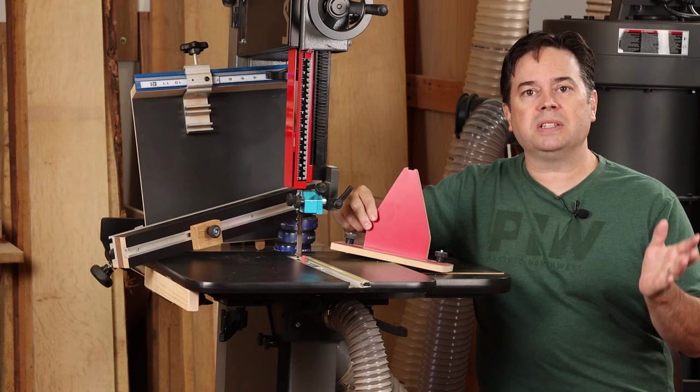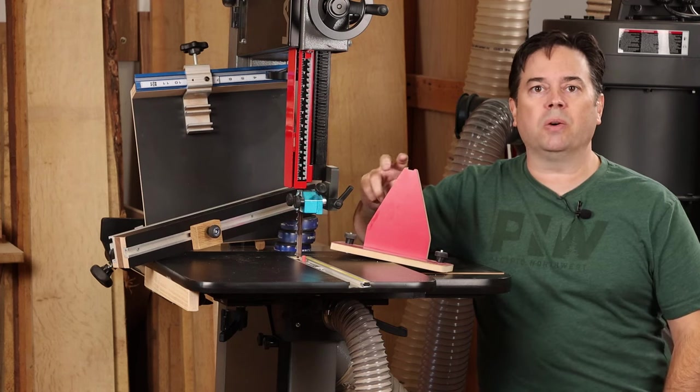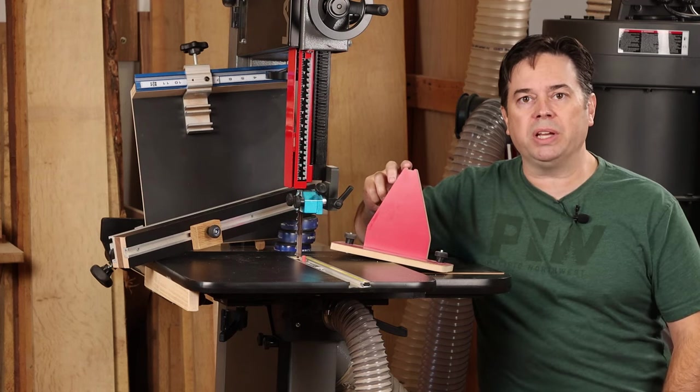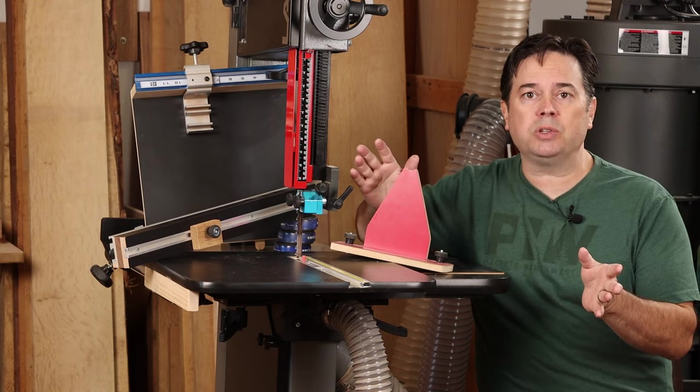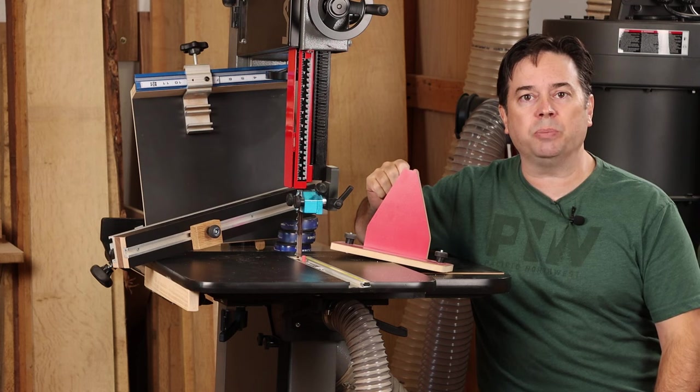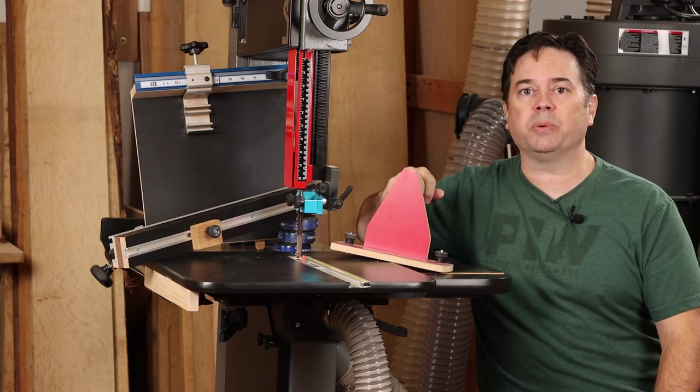And finally, we'll finish things up with a template cutting jig, or sometimes called a template rub jig. And what this allows you to do is use the bandsaw to cut very close to your pattern when you're following a template, and then finish things up at the router table.